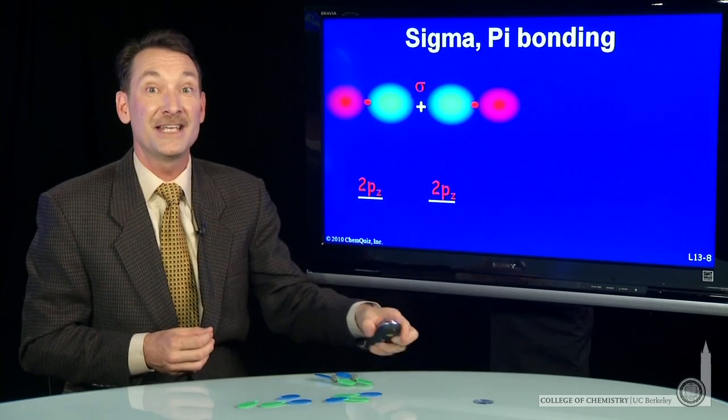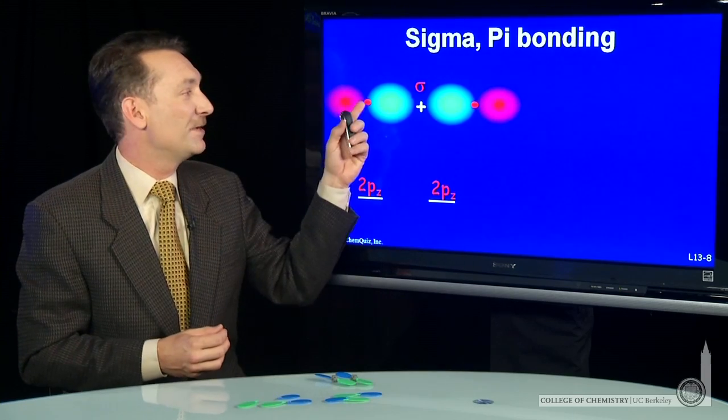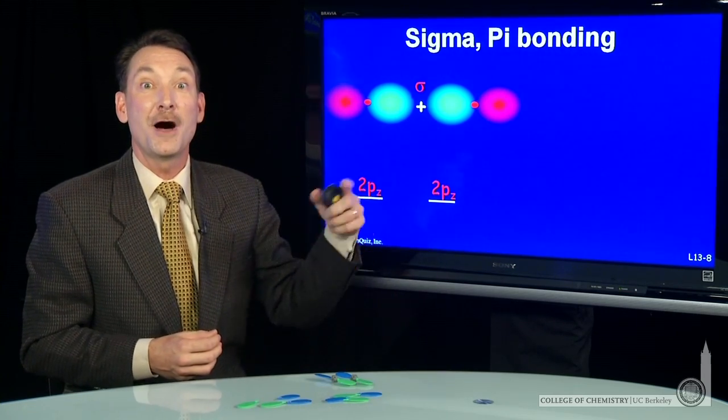If I choose the positive z axis, then I can add the pz orbitals together, pz atomic orbitals to form a molecular orbital.